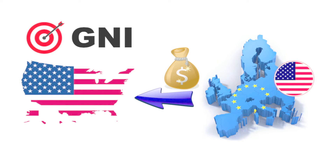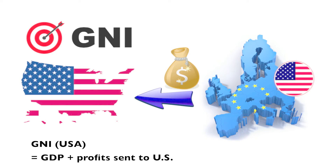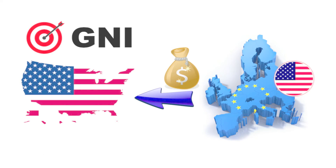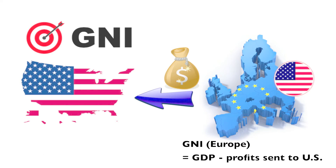In this case, in order to calculate the Gross National Income, the profits are added to the American GDP, but subtracted from the European GDP.